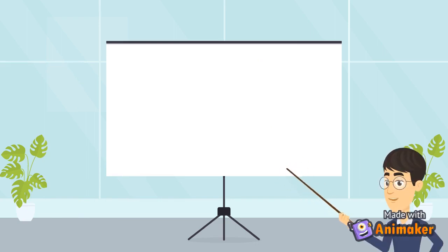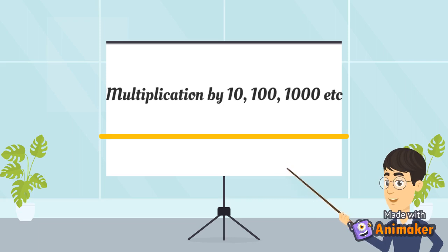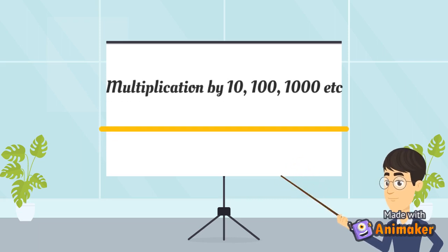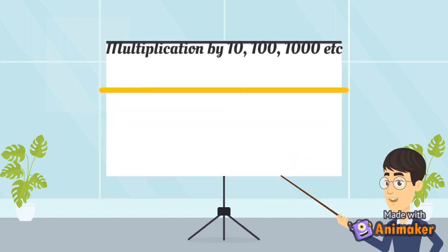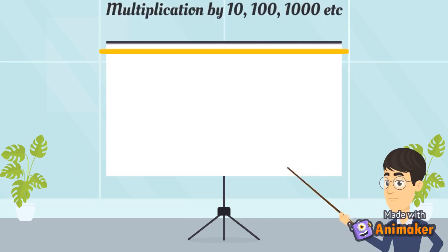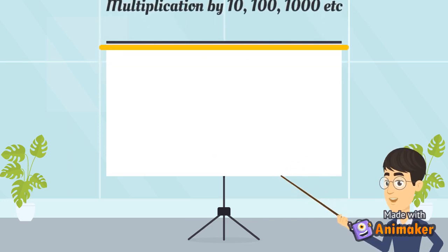Now let's look at the multiplication of a number by ten, hundred, one thousand, et cetera. If you multiply a number by ten, insert a zero at the right of the number. For example, if you multiply twenty-five with ten, the result is two hundred fifty.